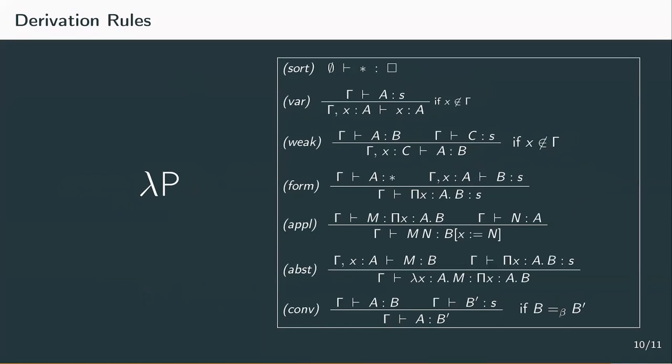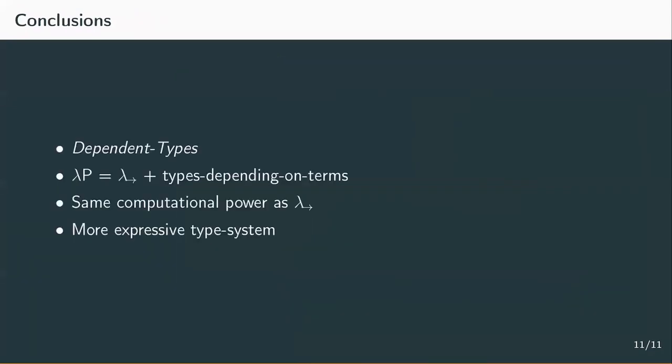So to conclude this short video, the system lambda P adds the last missing type term dependency, types depending on terms, which means that a type constructor can take a term as an input and return a new type. This so-called pi type generalizes the arrow types that we used in every other system.